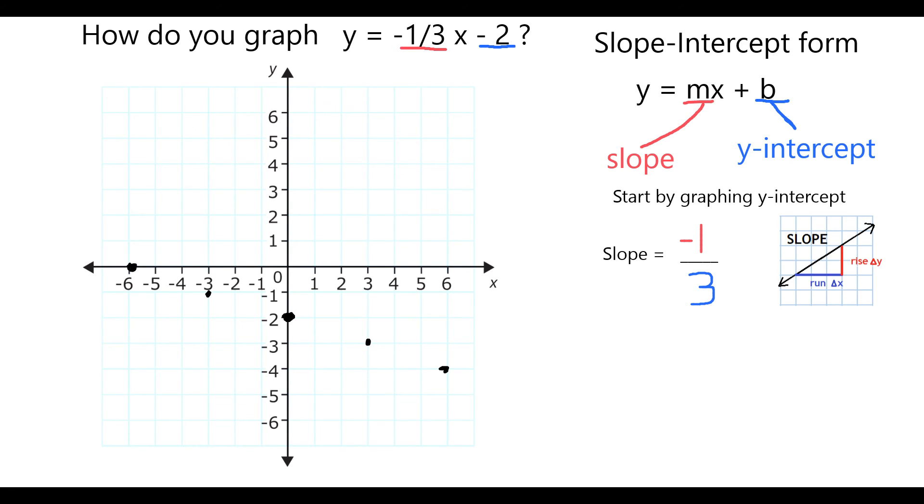So all those points, we see they make a nice straight line, and I can simply connect those to make my graph of my original equation, which is y equals negative 1 third x minus 2.